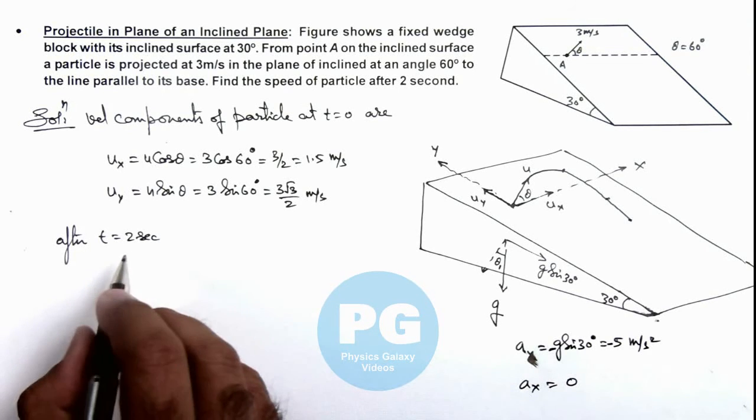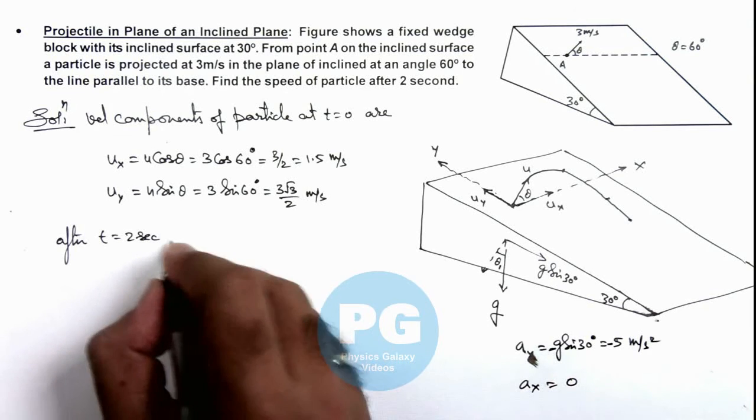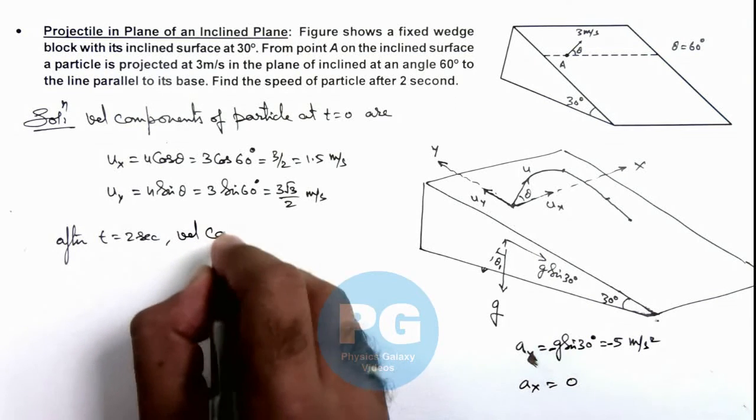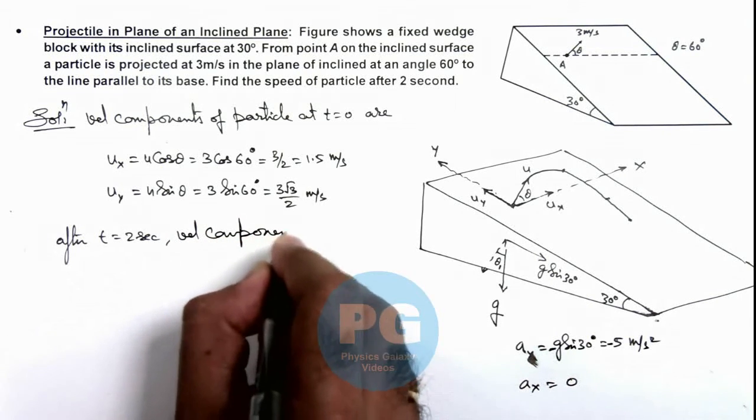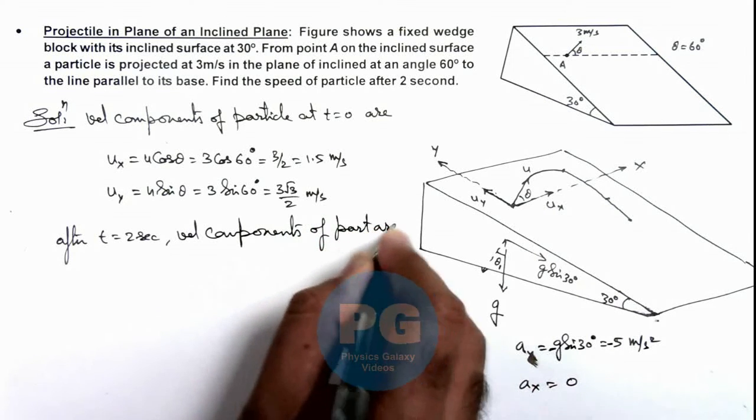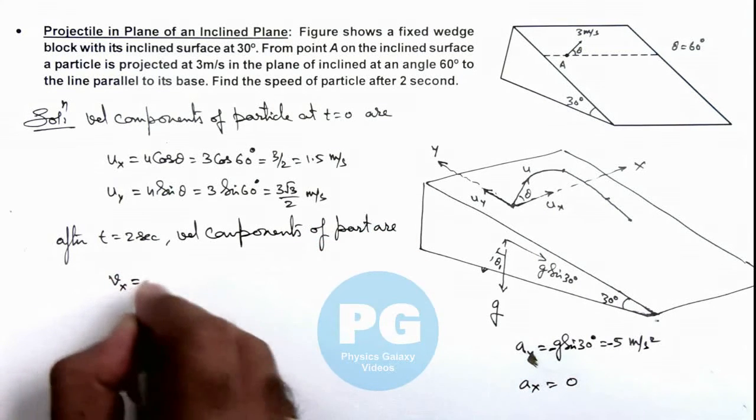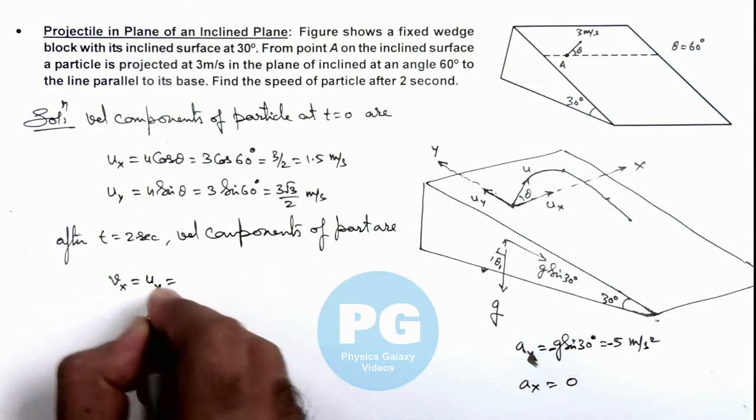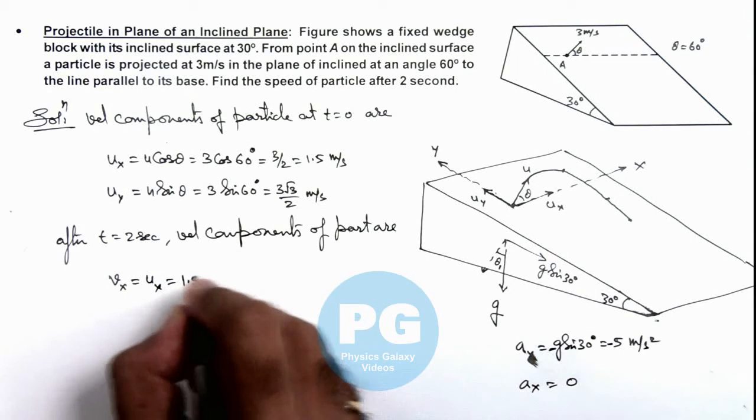So here I can write after 2 seconds, velocity components of particle are: velocity in x direction will remain as ux, this is 1.5 meters per second.